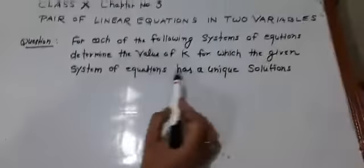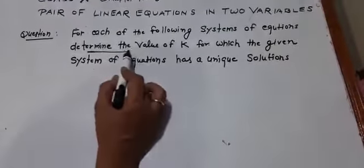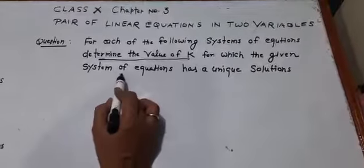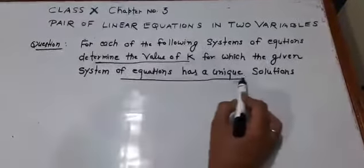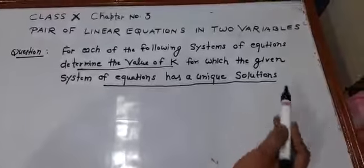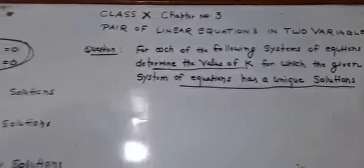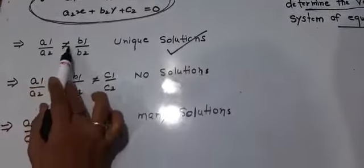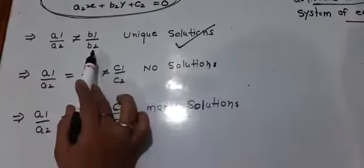Now, here we will be asking, determine the value of k when the equation has a unique solution. It means you need to use this formula: a1 upon a2 not equal to b1 upon b2.